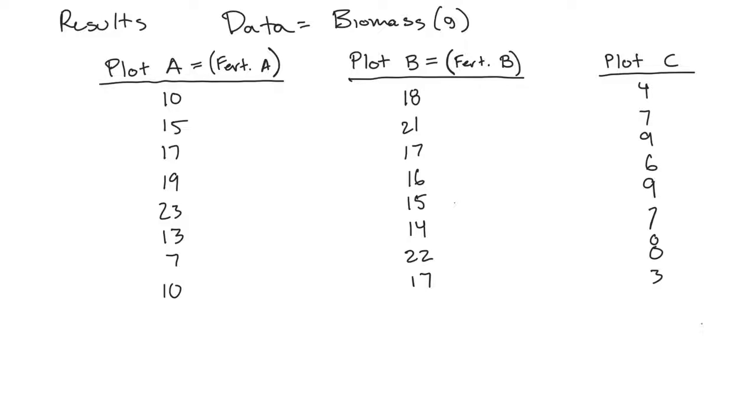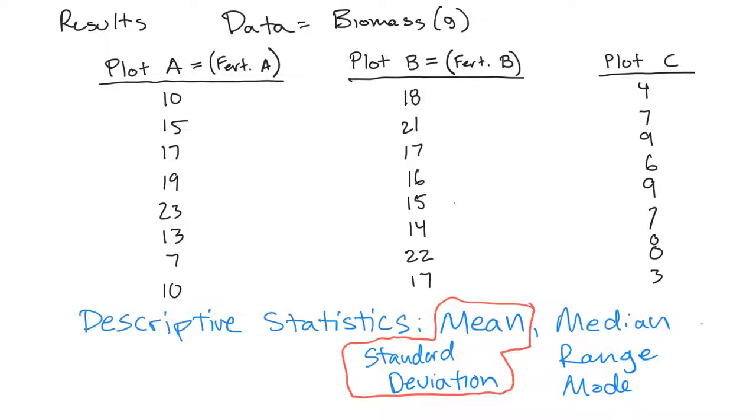Now that we have our experiment set up, we run it for a week and get some results. Here's our data that we gathered from our three plots. Can you tell just by looking at this data which one worked best or if there was an effect? Not really, you can kind of. So we measured biomass in grams. You could have done height or leaf or fruit. After a week, we harvested all of them and measured them on a scale. So what do we need to do to the data to make comparisons? Find the average.